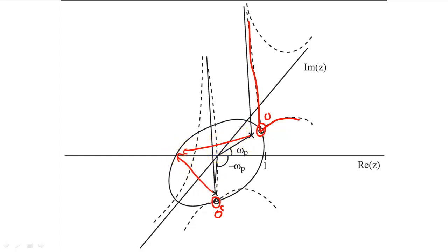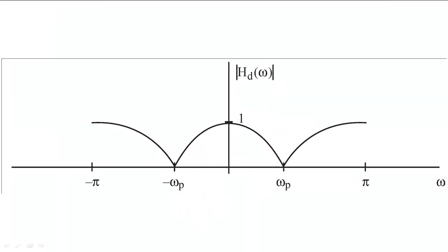Therefore, we might guess that the magnitude of the filter might look something like this. The filter would be zero at negative omega p and omega p, and would increase to a couple local maxima away from the location of the zeros.